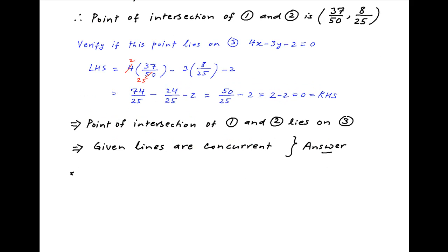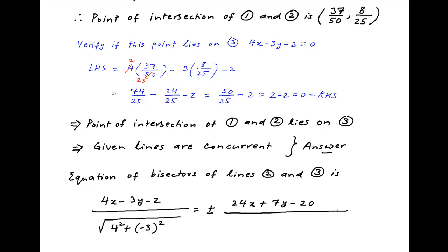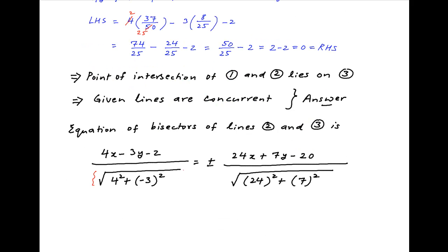Now for the second part of the problem, let's obtain the equation of the bisector of lines 2 and 3. The equations of the bisectors are given by (4x minus 3y minus 2) divided by the square root of the sum of the squares of the coefficients of x and y, equal to plus or minus (24x plus 7y minus 20) divided by the corresponding denominator. The denominator on the left hand side equals the square root of 16 plus 9, which is 5. The denominator on the right hand side equals the square root of 576 plus 49, which equals the square root of 625, which is 25.